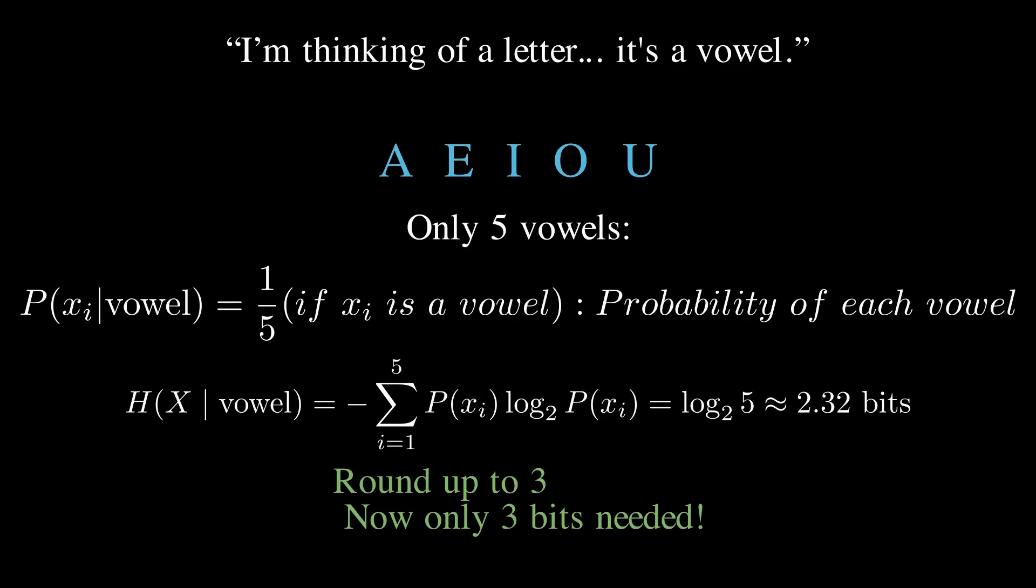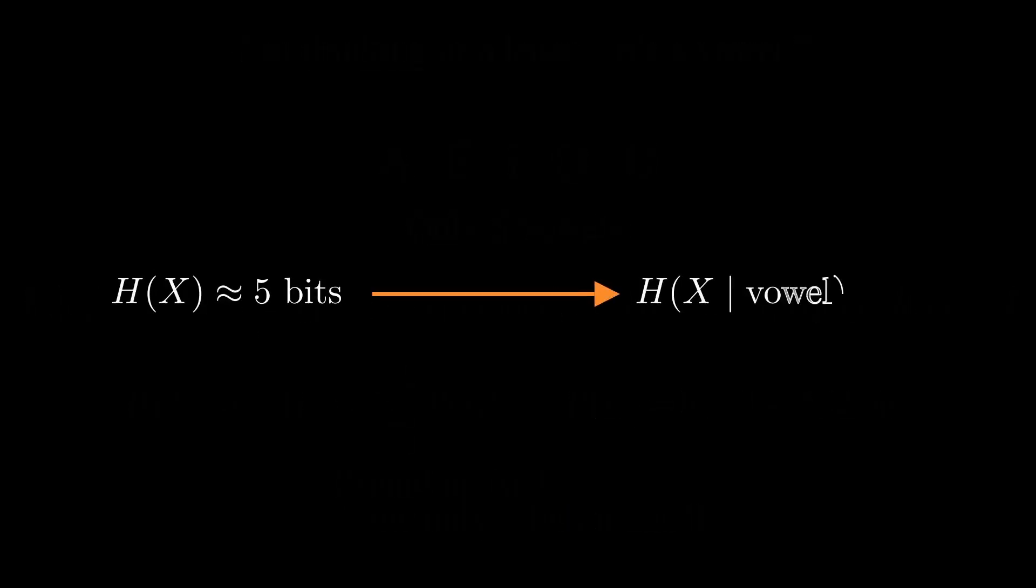Round that up and it's 3 bits. So just by knowing it's a vowel, we dropped from 5 bits to 3 bits. That's the magic of conditional entropy. Entropy tells you how much information you would need or how many questions you would need if you know nothing. Conditional entropy tells you how much is left to learn once you already know something.